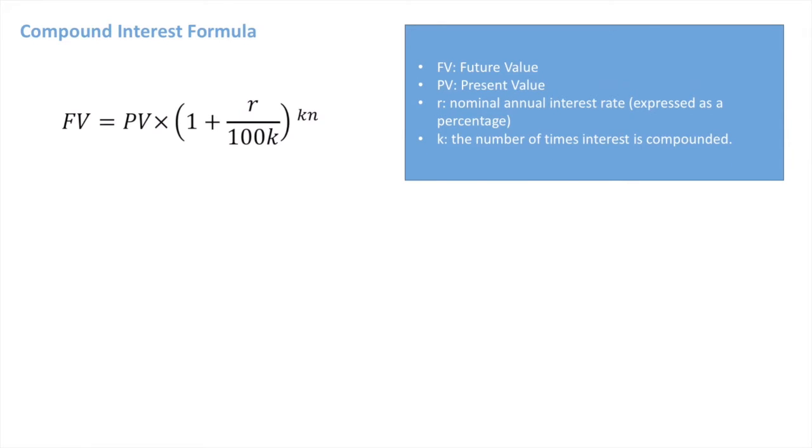K is the number of times interest is compounded. Typically we'll see exercises in which it's compounded monthly, annually, or quarterly.